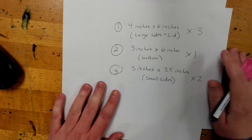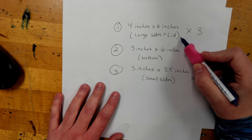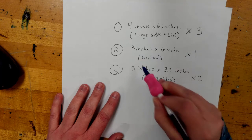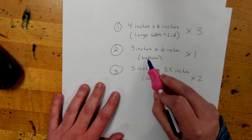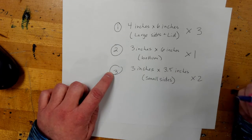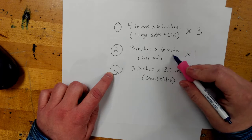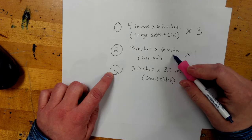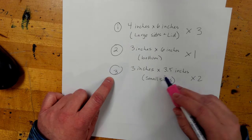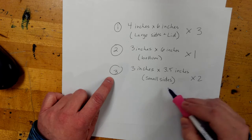So, just to review, we just completed our four by six inches. We made three of them, because that's how many we need. And then on the next paper, we are going to do the second and third rectangle shapes that we need. So, again, we need one three by six inches for the bottom. And then we'll need two of the three by three and a half inches for the small sides.